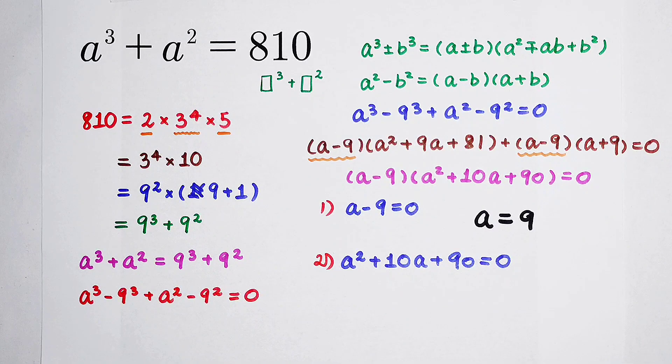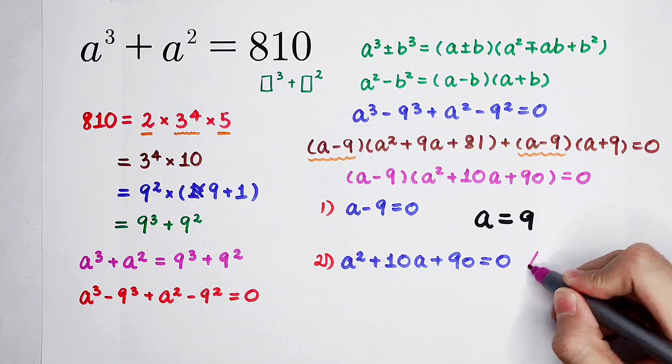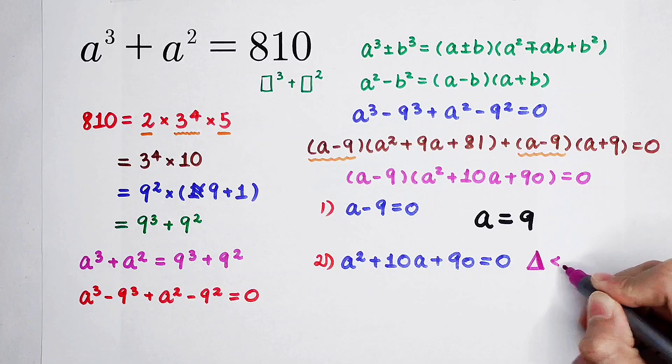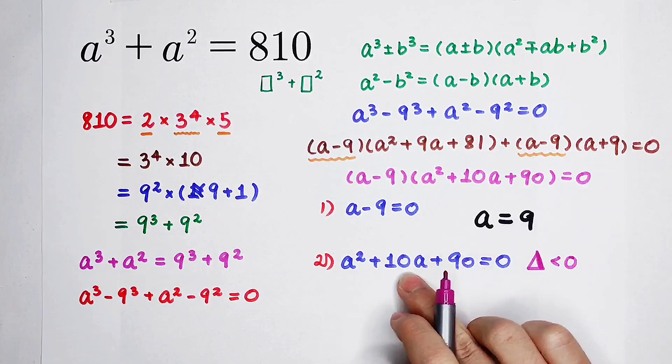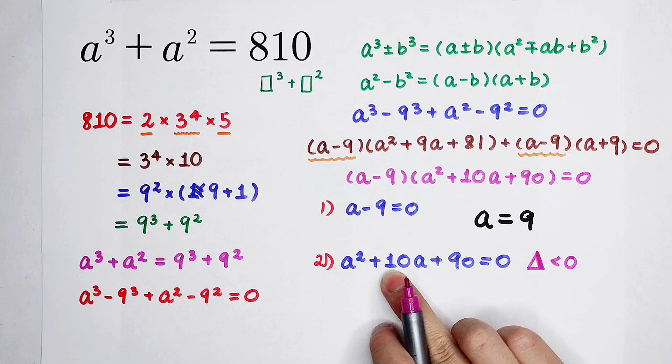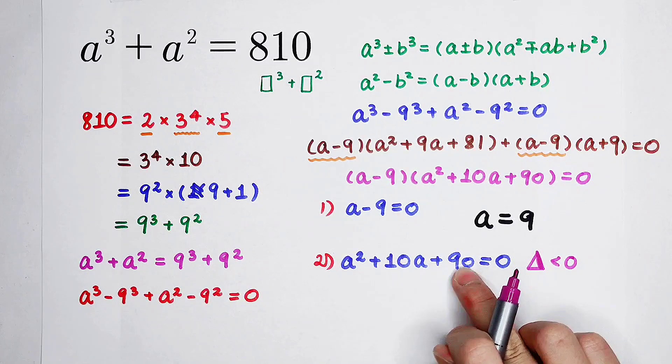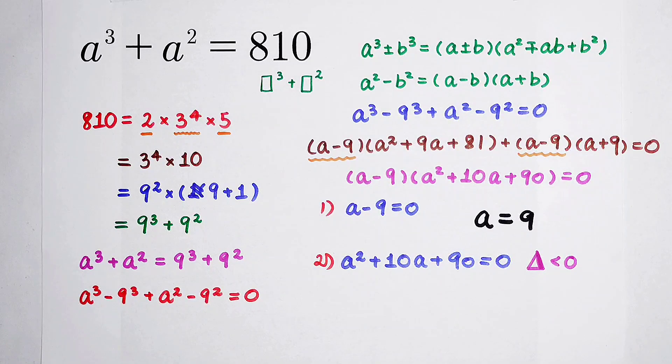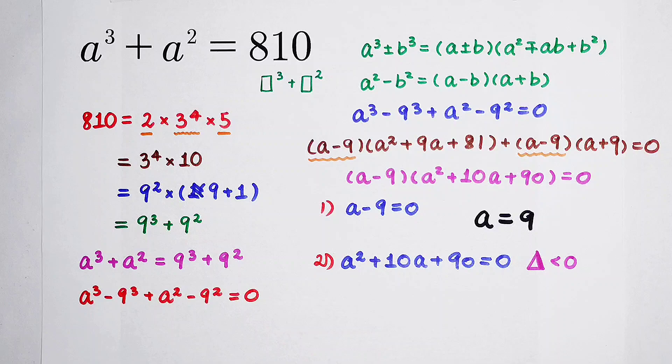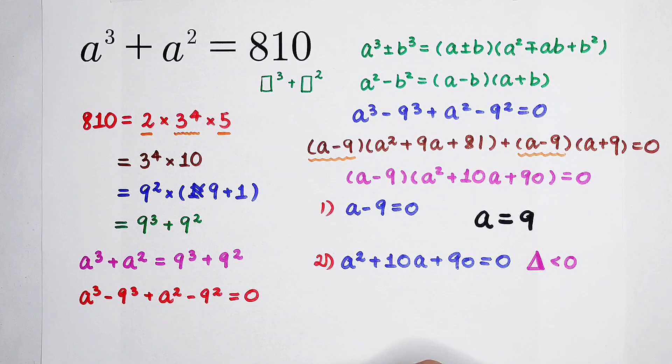For the second case, because the delta is smaller than 0, it is b squared minus 4c. 100 minus 4 times 90 is smaller than 0. So now there aren't any real roots, but there are two other complex roots. I'm going to write them down.